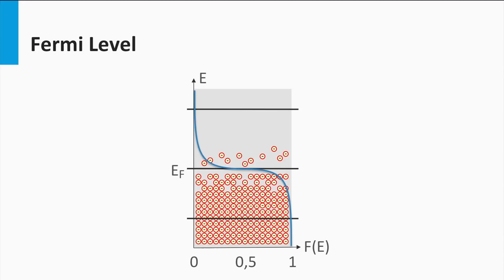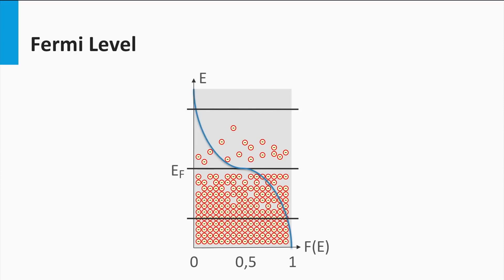For higher temperatures this distribution starts to broaden around the Fermi level. Around the Fermi level the energy is distributed over values between 0 and 1. The higher the temperature, the broader the distribution around the Fermi level will be.